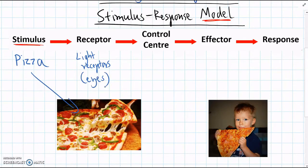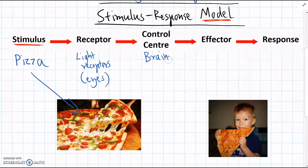And then the receptor to observe that stimulus is going to be light receptors in our eyes. The next part of the stimulus response model is there's some sort of control centre, and usually it's the brain, and the control centre is what makes the decision.